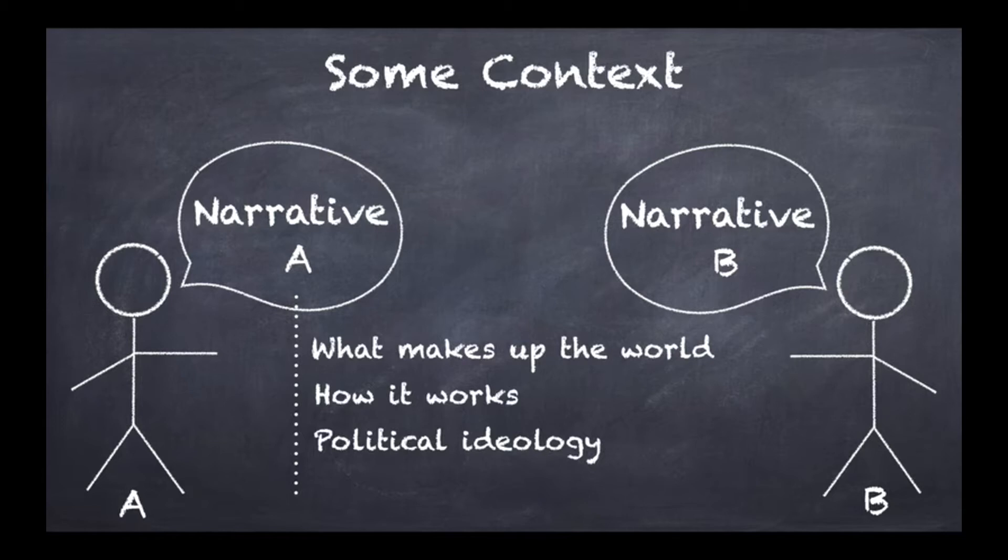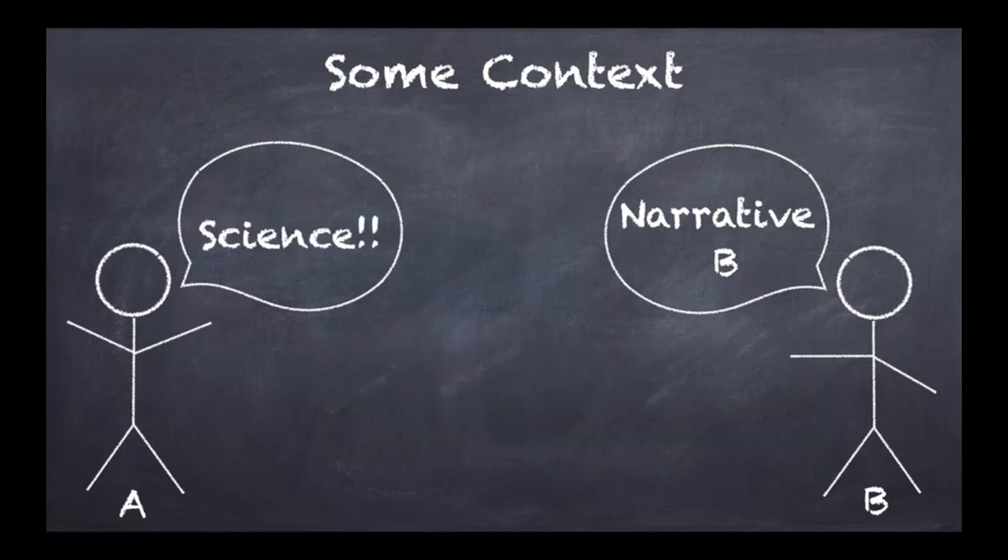Person B is going to disagree and push a different narrative called narrative B, equally metaphysical with the same nature of statements. At some point in the discussion, person A comes and says 'but science' - essentially that science would be supporting narrative A and therefore person B has a duty to believe in narrative A and act accordingly. The thing is that person B instead just says 'it's just a theory.'